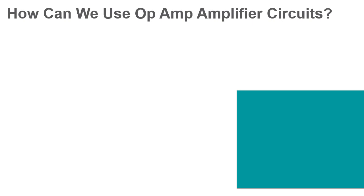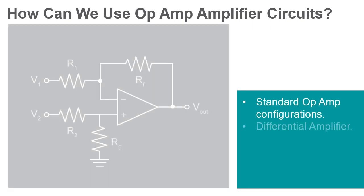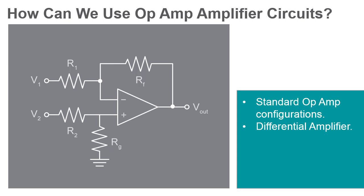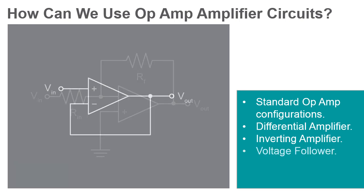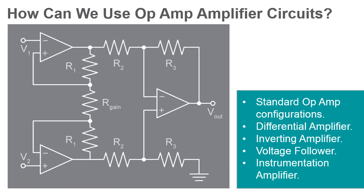Op-amp amplifiers are used in many different types of circuits and in many different configurations, but there are a few standard configurations. The differential amplifier does what its name suggests — it amplifies the difference in voltage between its inputs. The inverting amplifier is a special type of differential amplifier in which the non-inverting input of the op-amp is grounded and the inverting input serves as VIN. The voltage follower, or unity buffer amplifier, is used to connect a device with high source impedance to a device with low input impedance. The instrumentation amplifier combines properties such as low DC offset, very high input impedance, and high common mode rejection — the rejection by the device of unwanted input signals common to both input leads — making this amplifier ideal for accurate, low noise measurements.